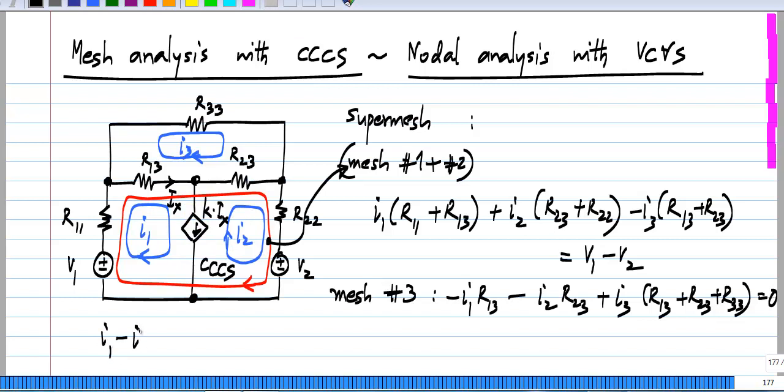So, by combining I1 and I2 in this branch, we know that this current k times Ix is I1 minus I2. So, I1 minus I2 is k times Ix and Ix itself is the current through this branch R13. So, it is k times I1 minus I3.